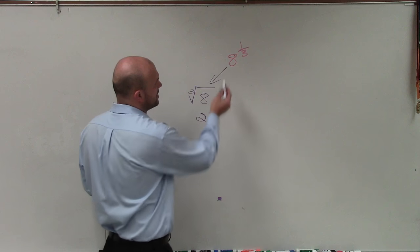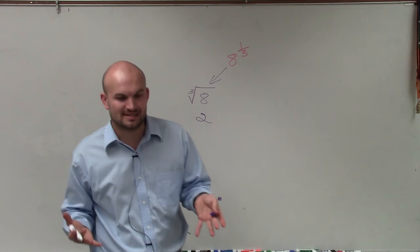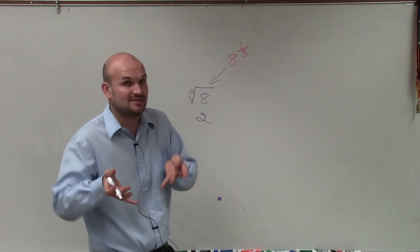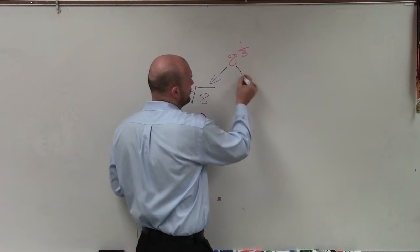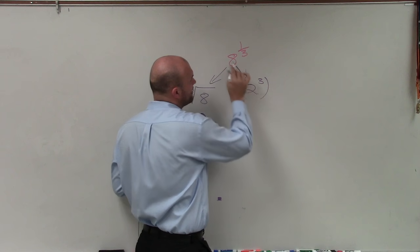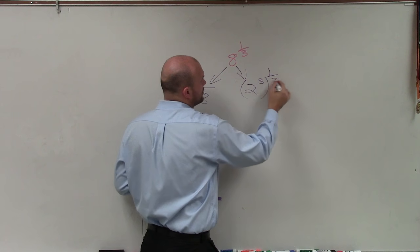The other way we can look at this is just to say, how can you rewrite your base as an exponent, as a number raised to a power? And the only way that we have is 2 to the third power. So if I rewrite 8 as 2 to the third power to the one-third,